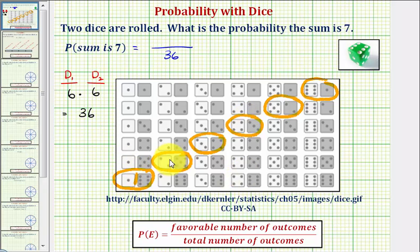So we can see there are a total of one, two, three, four, five, six favorable outcomes, and therefore the probability of rolling two dice and having a sum of seven equals 6/36. We do have a common factor of six here. The simplified probability as a fraction would be 1/6.